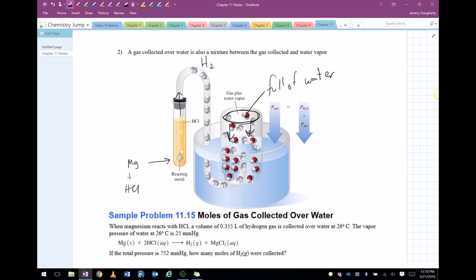So the big thing here, though, is that inside that container isn't just the hydrogen gas, it's also the water vapor. So that means that the total pressure inside this container is equal to the pressure of the gas that I collected plus the pressure of the water.